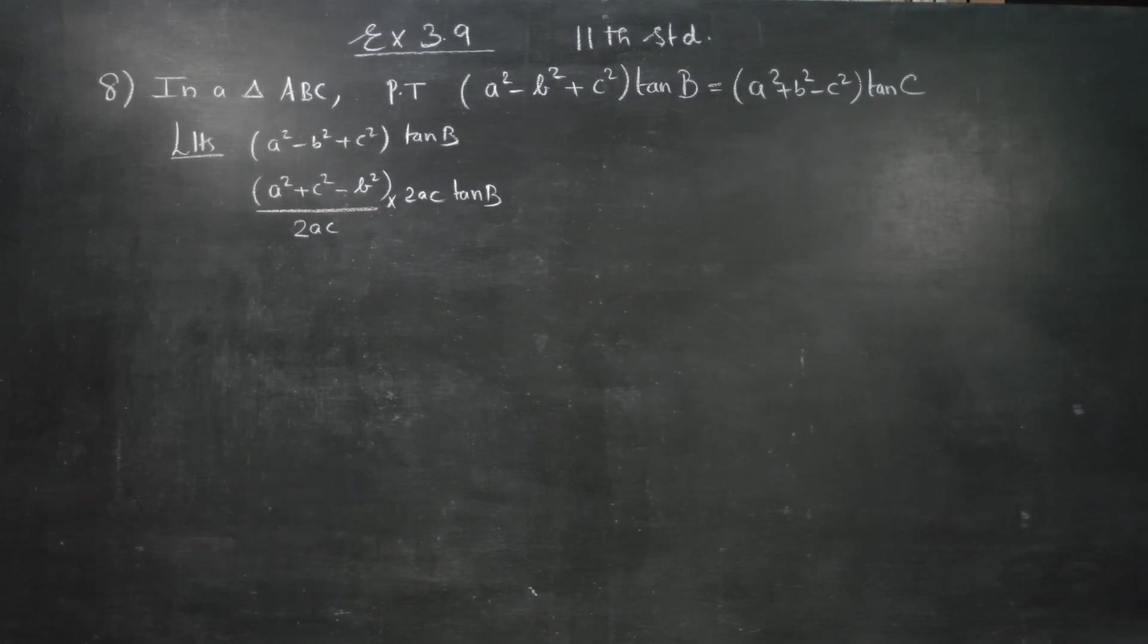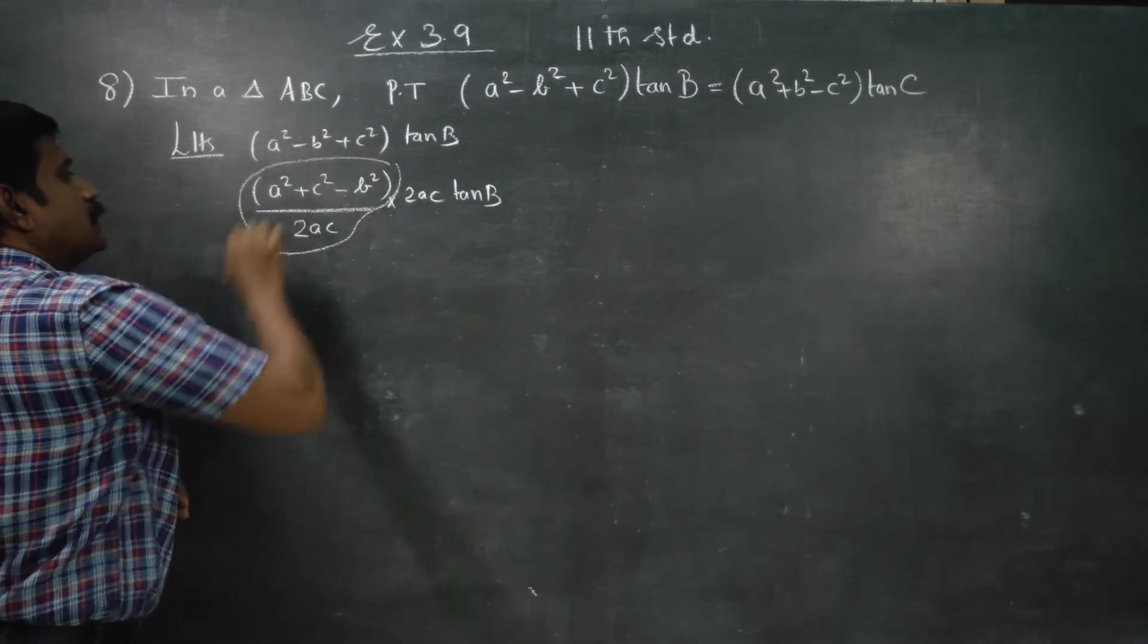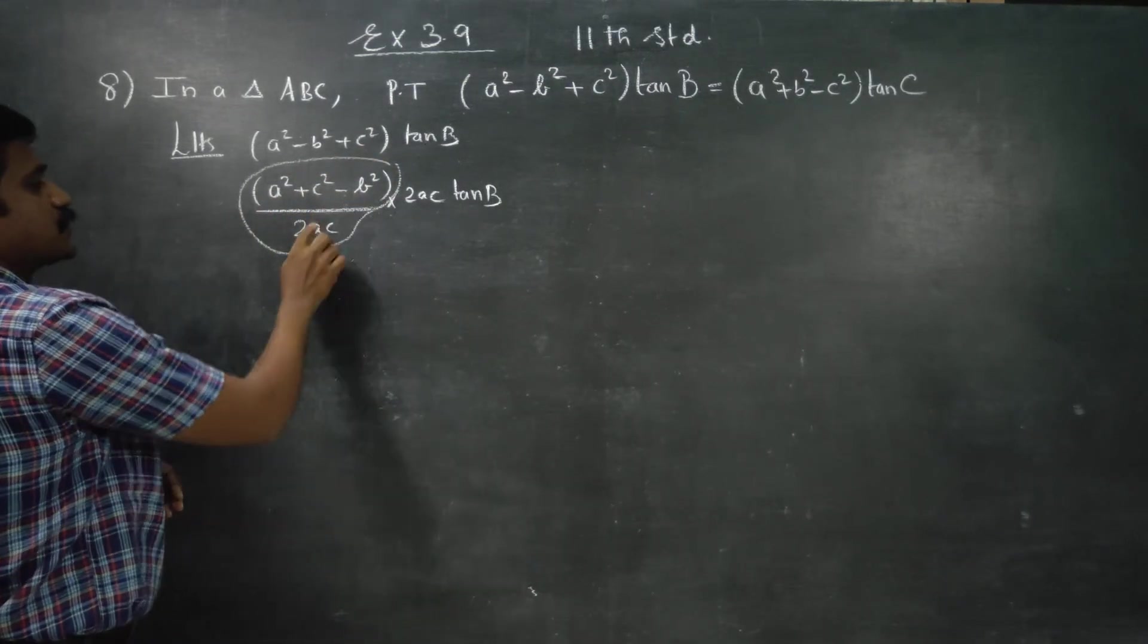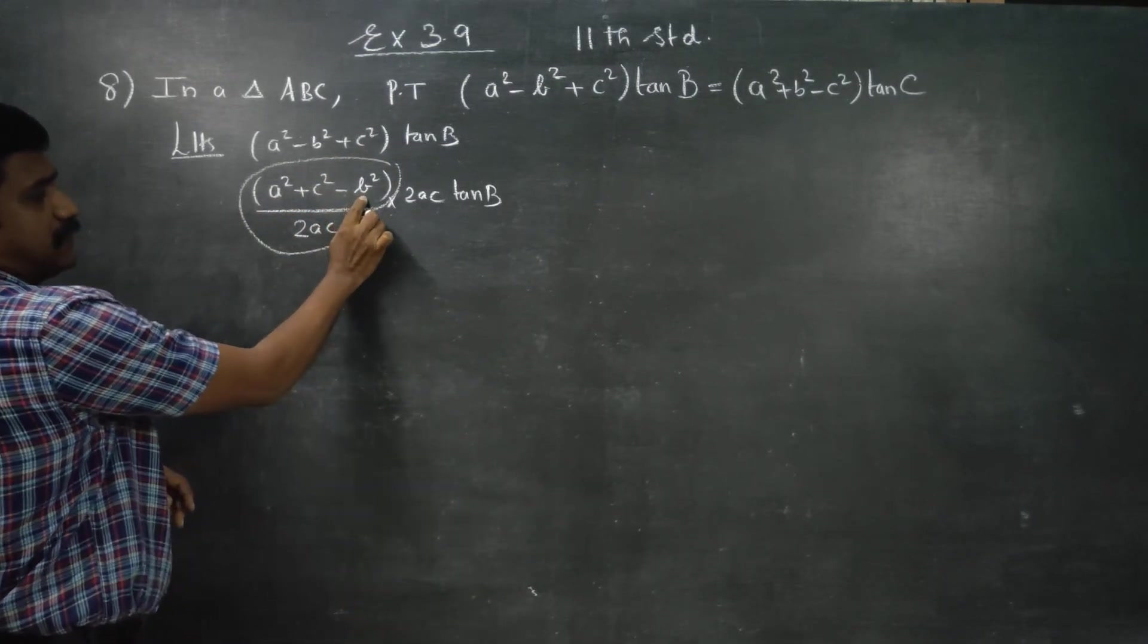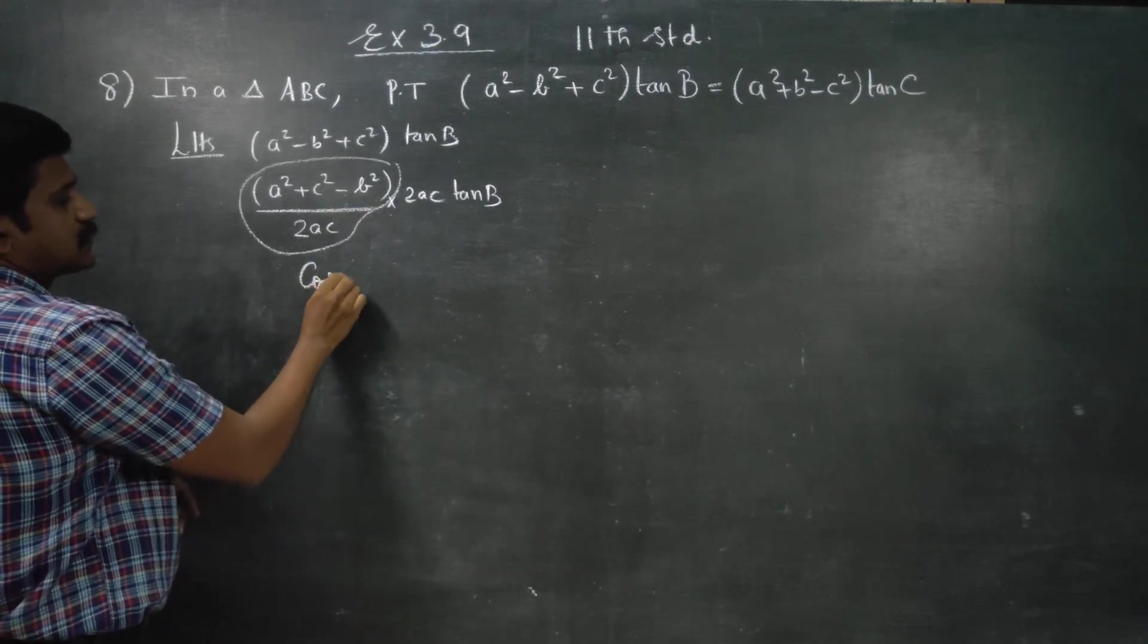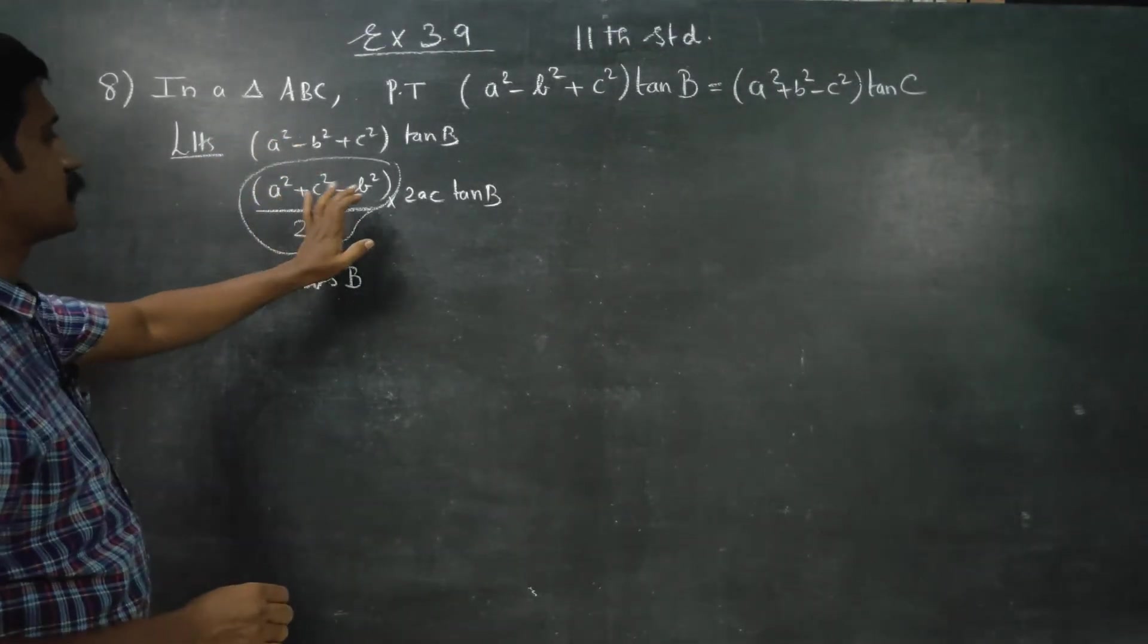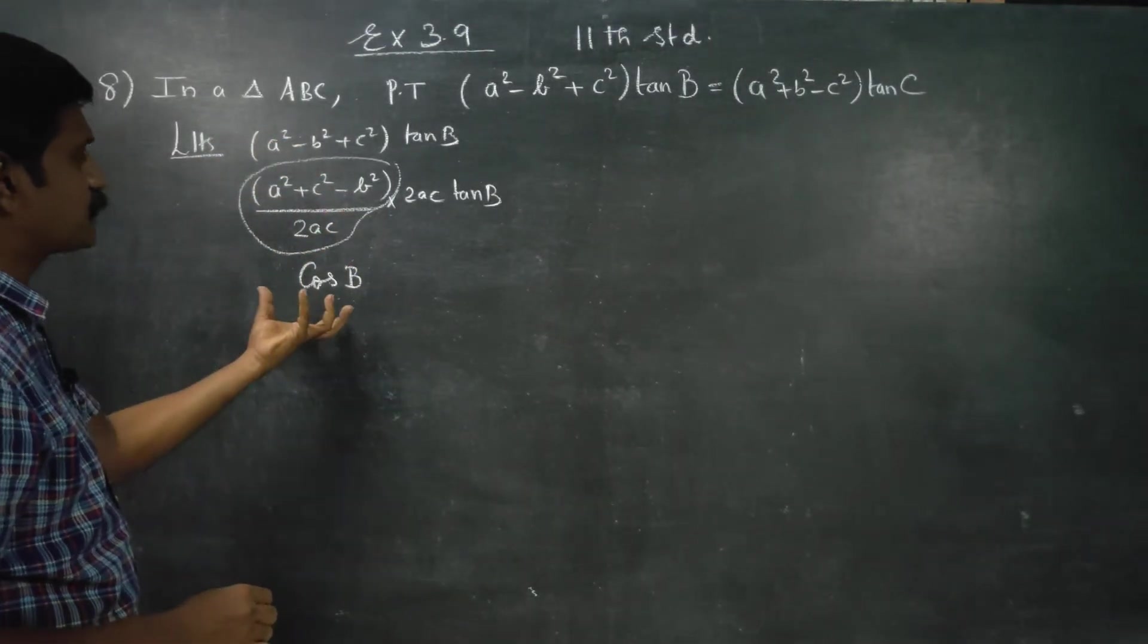2AC tan B. Why multiply and divide by 2AC? Because this is a ready-made formula in the cosine formula: A² plus C² minus B² by 2AC is cos B. This is the cosine formula, A² plus C² minus B² by 2AC equals cos B.